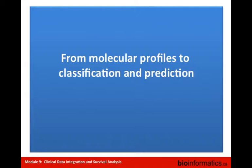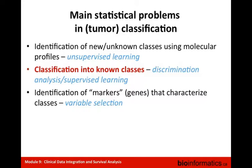How can we go from molecular profiles to classification and prediction? The main statistical problems in tumor classification include: identification of new or unknown classes using molecular profiles — called unsupervised learning; classification into known classes — called discriminant analysis or supervised learning; and identification of markers that characterize classes — called variable selection.